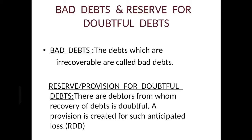So where will it go? All losses go to profit and loss account, debit side. One effect will be profit and loss account debit side, and the second effect is you have to deduct bad debts from the debtors, because your debtors have reduced to that extent of bad debts.